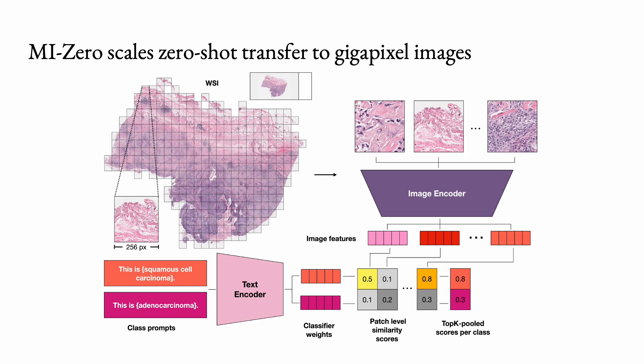Optionally, we can also apply spatial smoothing to aggregate information from neighboring patches. The class with the highest slide-level similarity score is considered the prediction, and these various configurations of MI0 are compared in downstream evaluation.